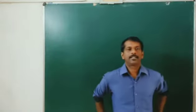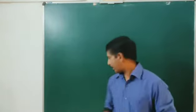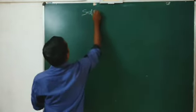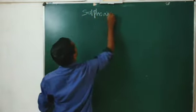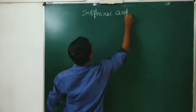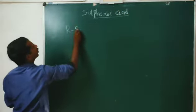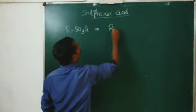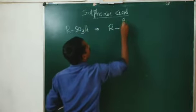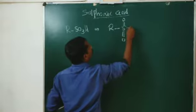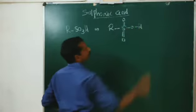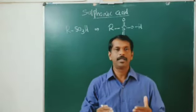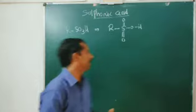Good morning. Next is sulphonic acid. The general formula is RSO3H. The actual structure is R with double bond O, double bond O, O, H. This is sulphonic acid. And now we discuss benzene sulphonic acid.